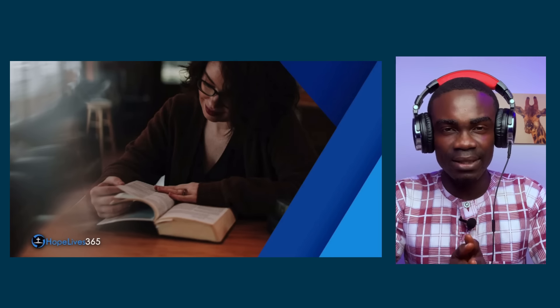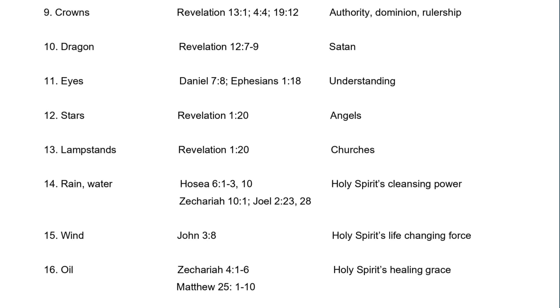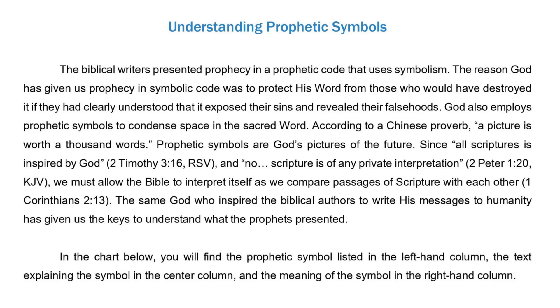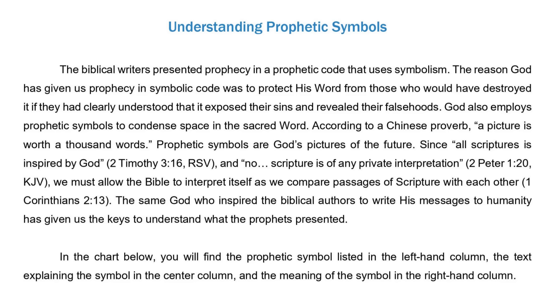Principle number two: Revelation is written in a prophetic code. It is written with symbols. And for every symbol that God gives, he has given an explanation or an interpretation for that symbol. If God gives a symbol in Revelation, he gives an explanation for that symbol. Let me give you some examples.